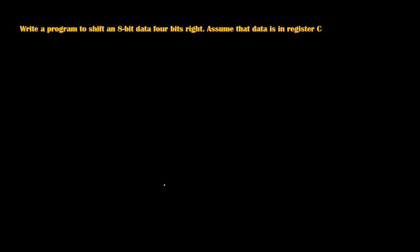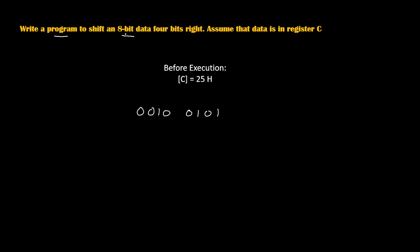Hello friends, today we are going to learn a program to shift 8-bit data 4 bits to the right. It is given that data is in the C register. Let's assume before execution the C register is 25H. In binary, 25H can be written as 0010 (which is 2) and 0101 (which is 5).